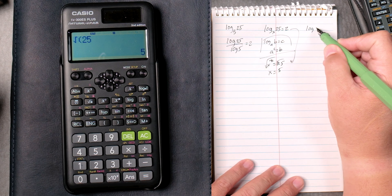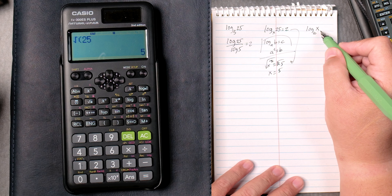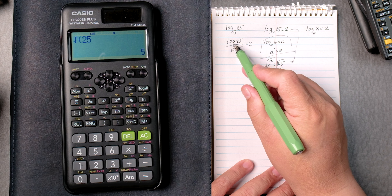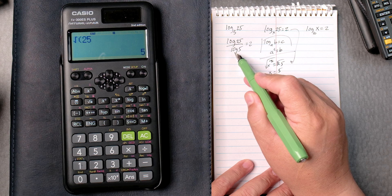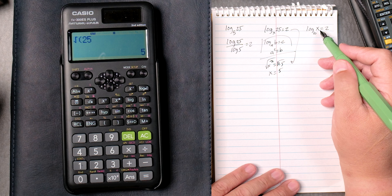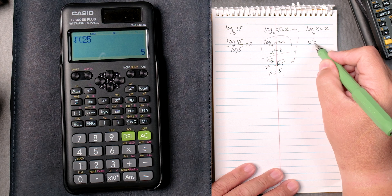Then we have the log, base 10, x, equals 2. By the way, these logs, these logs are based on 10. This log is based on 5. So log 10, x equals 2. Same rule, 10 squared equals x.